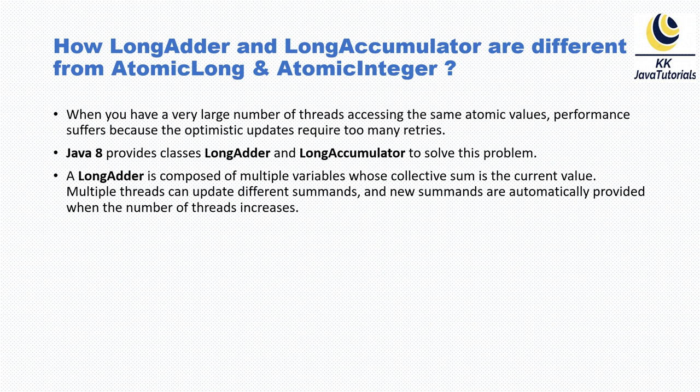A LongAdder is composed of multiple variables whose collective sum is the current value. Multiple threads can update different summands, and new summands are automatically provided when the number of threads increases. So if you want to calculate the sum of a lot of numbers of type long, you can make use of the LongAdder class, which is completely thread-safe and uses the optimistic update approach.